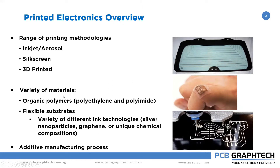Now let's see what variety of materials and substrates are used for printed electronics. For rigid substrates, you can use silicon, ceramics, or glass. For flexible materials, you can consider organic polymers like polyethylene and polyamide. For flexible substrates, we look at inks. Different ink technologies include silver nanoparticles, which have special properties, and graphene ink, which is used for high-speed applications and has a unique chemical composition used in circuits — the best example being a glucose monitor, where the ink reacts with blood sugar to give different electrical properties as an output.